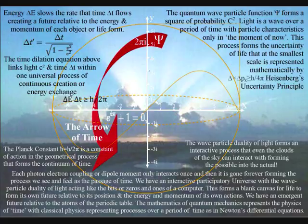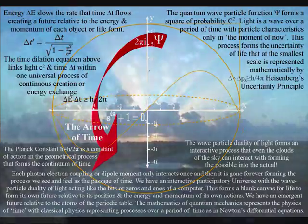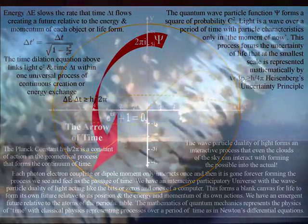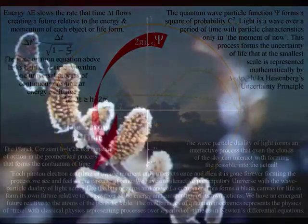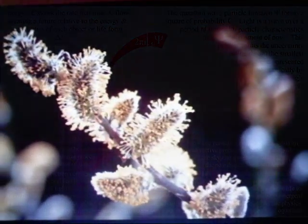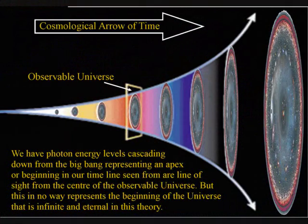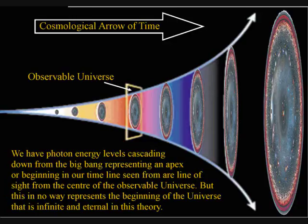Just as we have photon energy levels cascading down from the Sun, forming greater degrees of freedom for entropy and greater degrees of freedom for the complexity and diversity of cell life, we also have photon energy levels cascading down from the Big Bang representing an apex, or a beginning, in our timeline, seen from our line of sight from the centre of the observable universe.